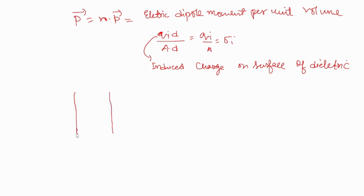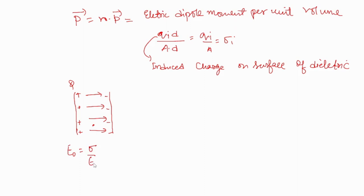Now, consider a capacitor gap setup where the facing surfaces are having opposite charge. Let's say this value is q. The direction of electric field will be in the forward direction. The electric field here, E-naught, is equal to sigma upon epsilon-naught, or you can say q upon A times epsilon-naught.